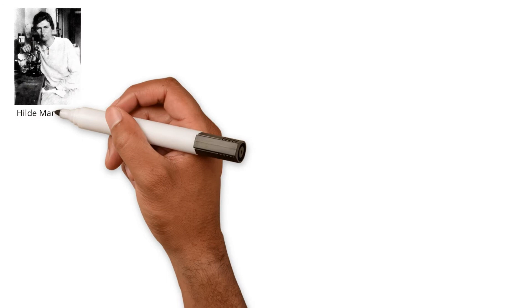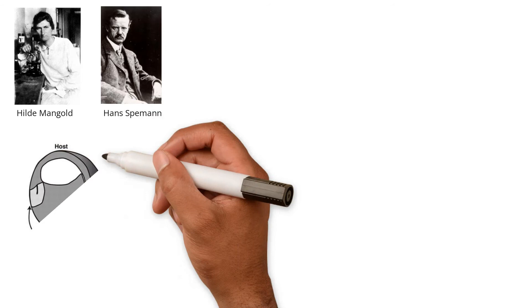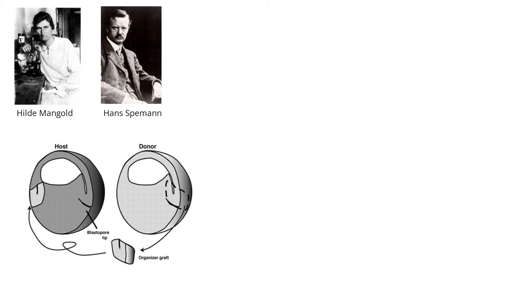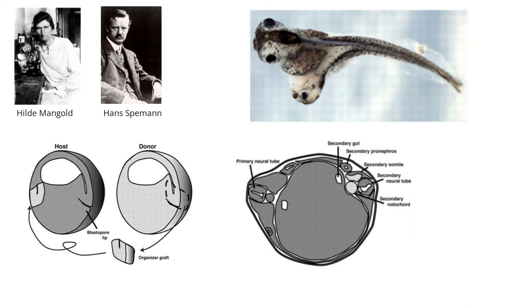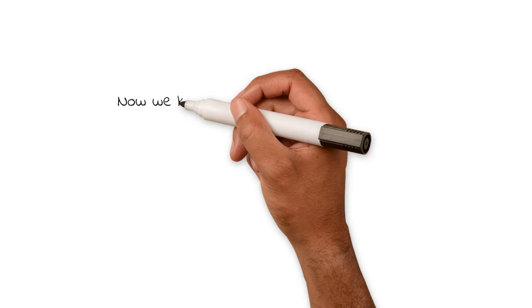A study by Hilda Mangold and Hans Speman discovered the organizer in 1924, when they transplanted this section of the gastrula into the ventral side of another gastrula in a tadpole. And once the host fully developed, it was seen that another new body axis formed, with its own head, eyes, spine, etc., proving the importance and requirement of the organizer in axis induction.